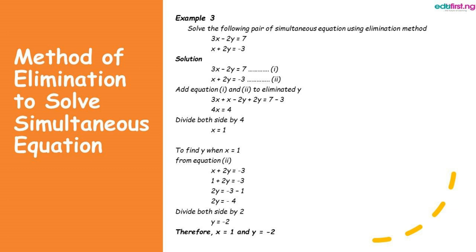So we add equations 1 and 2 together and we have 3x plus x minus 2y plus 2y equal to 7 minus 3. In this case, 3x plus x is 4x, and minus 2y plus 2y is 0. 7 minus 3 is 4. We divide both sides by 4 and we have x equal to 1.